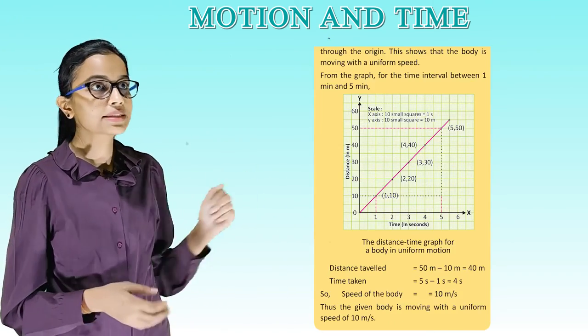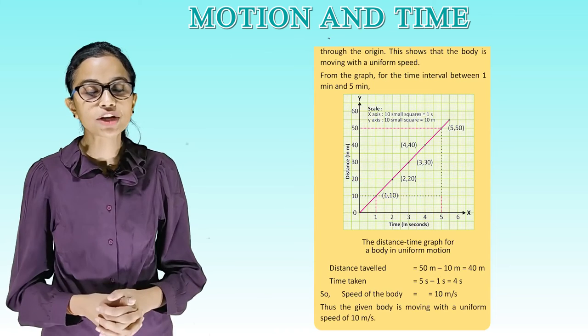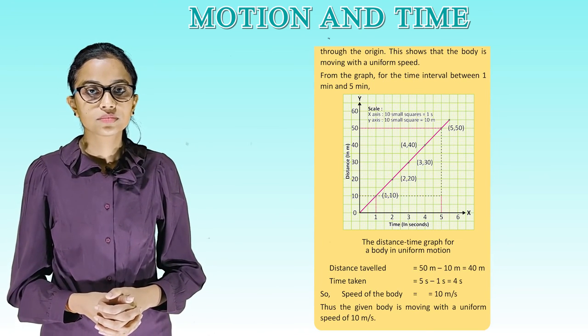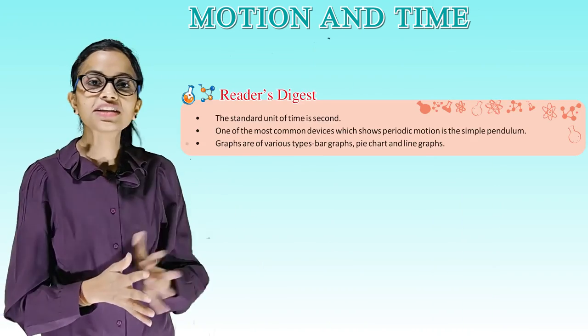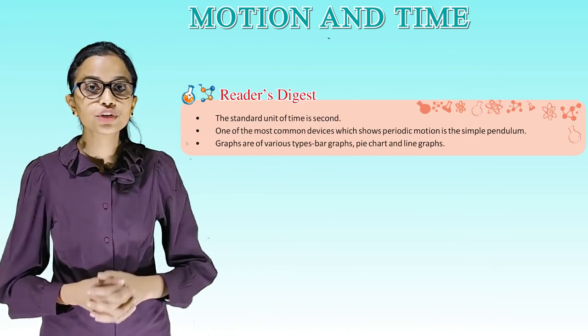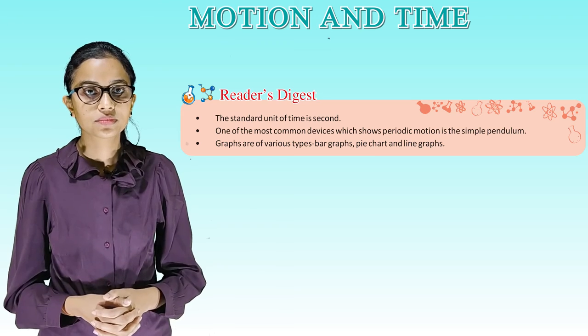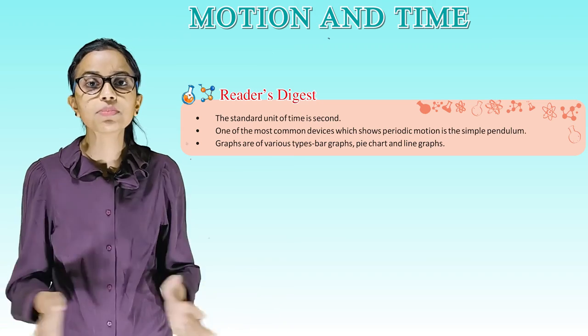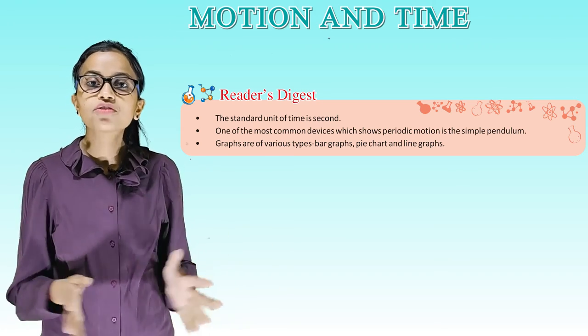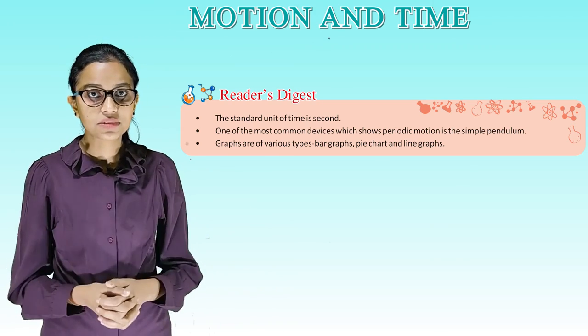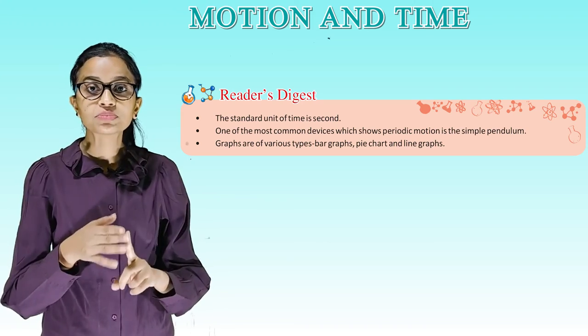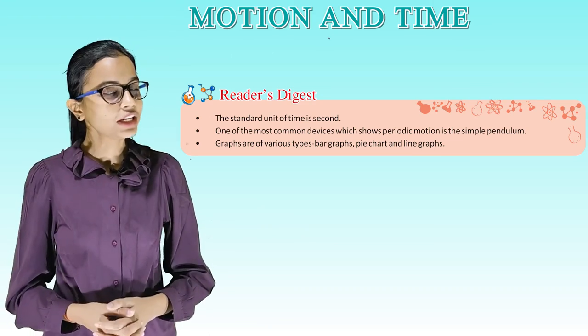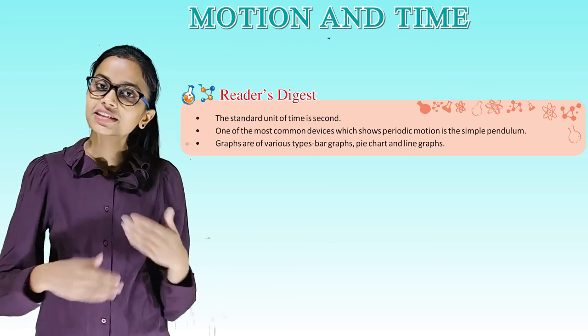So students, there is an example, so go through it and try to solve it. It's time for reader's digest. The standard unit of time is second. One of the most common devices which shows periodic motion is a simple pendulum. Graphs are of various types: bar graph, pie chart and line graph. So students, it's time to take your leap. We'll meet in the next class. Bye.